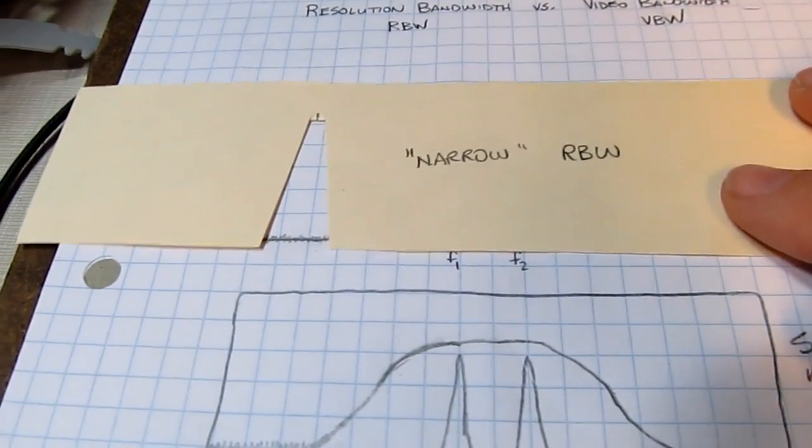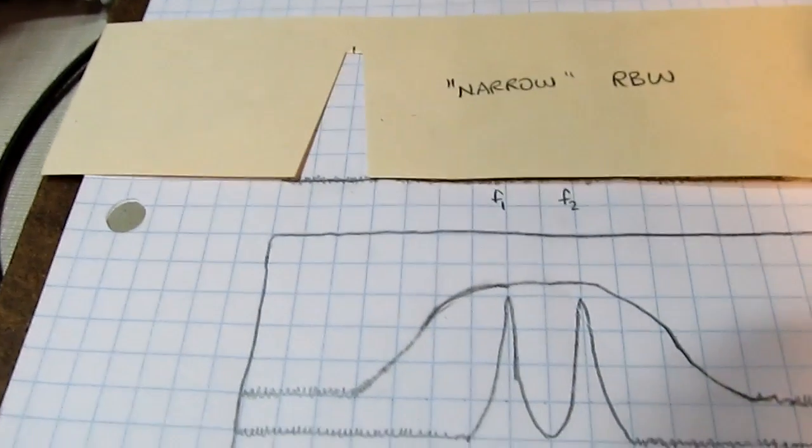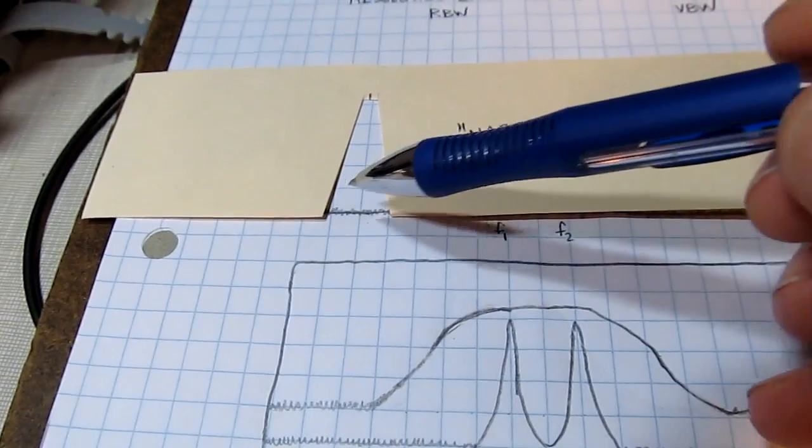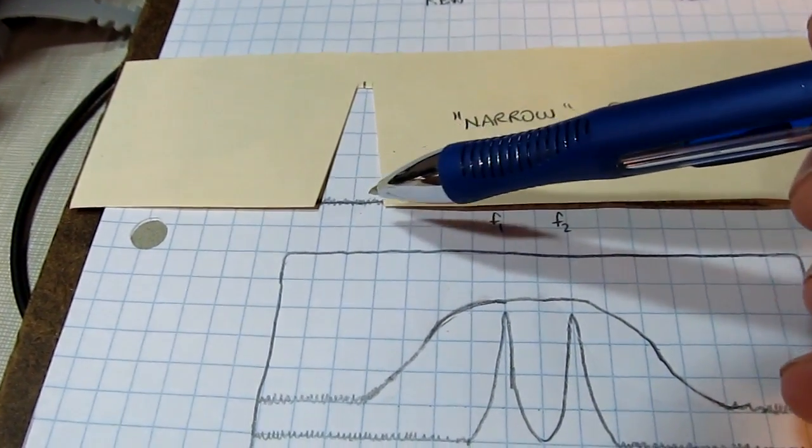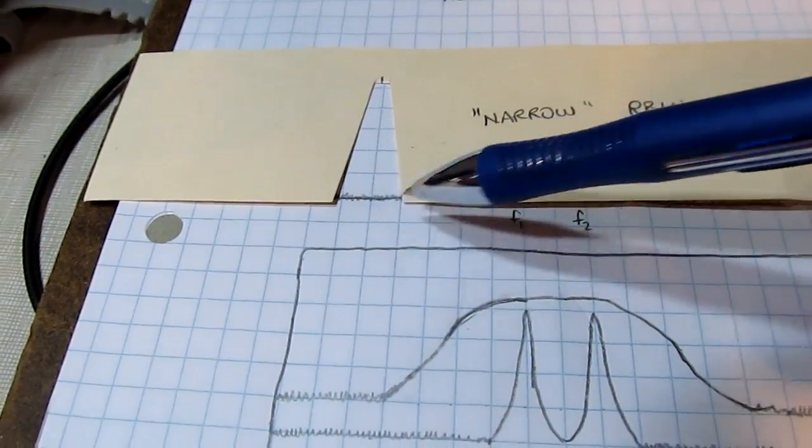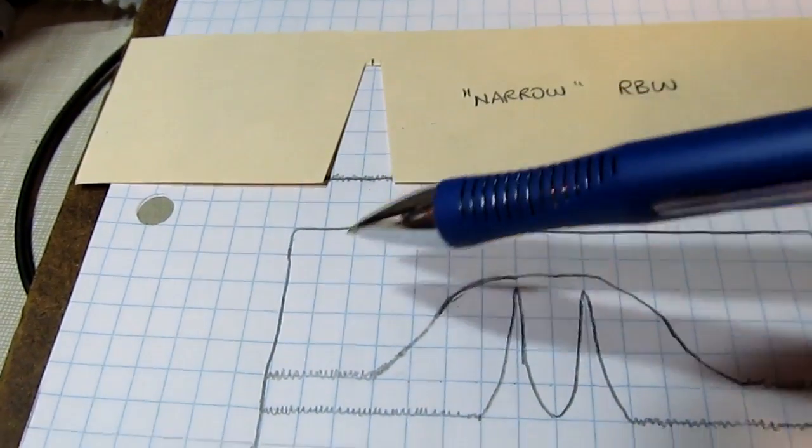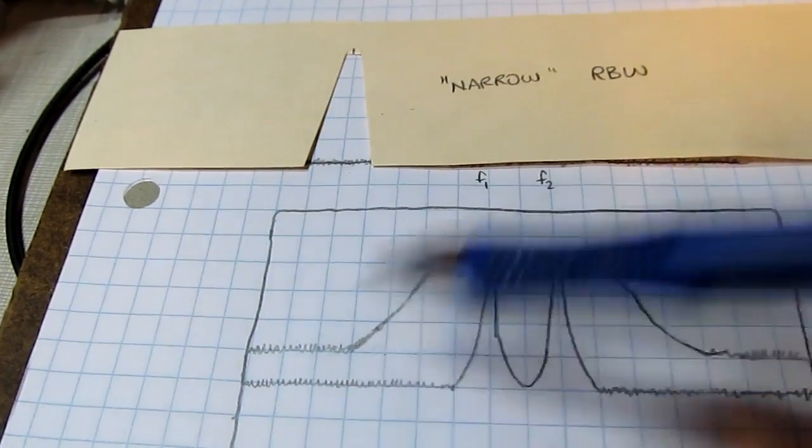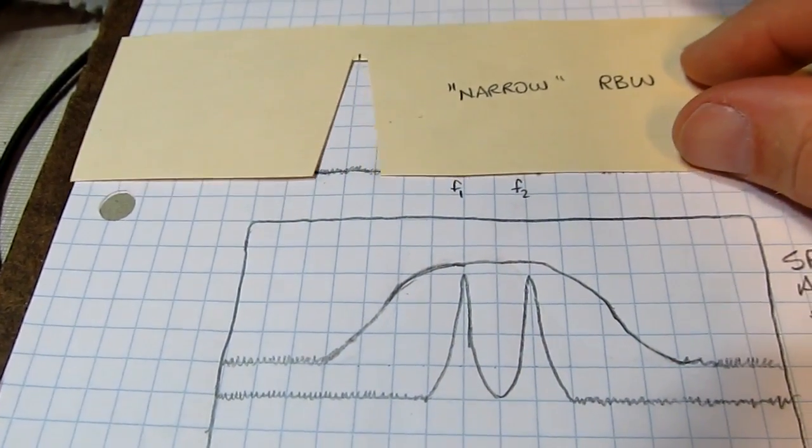Now if we switch to use a narrow resolution bandwidth filter, smaller eyes if you will, two things happen. One is that we're integrating the total power within this filter and since we're looking at less total bandwidth we're looking at less noise. So the noise displayed on the spectrum analyzer is going to be lower.